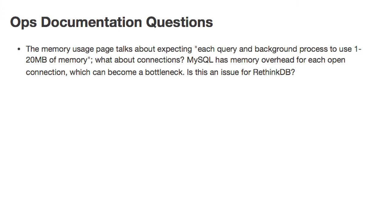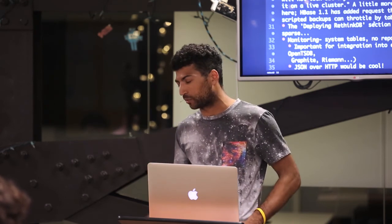Some questions from reading the operationally focused documentation: the memory usage page talks about each query and background process using between 1 and 20 megabytes of memory. I'm assuming that range is so big because it's hard to estimate ahead of time. But also, what about connections? We have an RDS instance running MySQL that has almost 2,000 open TCP connections — each application server has a pool of three or four connections and we have hundreds of application servers.